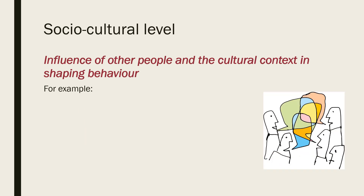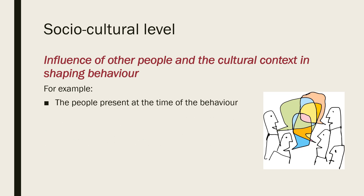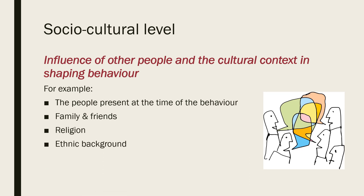The socio-cultural level is how other people and the cultural context influence and shape behaviour. This could be people present at the time the behaviour occurs, but also family and friends — things like peer pressure, social dynamics, how someone has been brought up, their religious beliefs, their ethnic background. You can also look at age and gender issues under the socio-cultural level, in particular stereotypes.